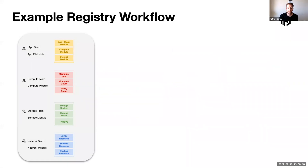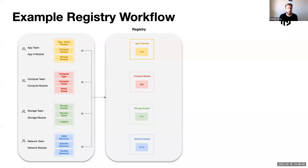Here's an example workflow that touches on the producer-consumer model. On the left-hand side, we have four teams — app, compute, storage, and network — and they've each built a module to share with the wider organization. Each of these modules represents a collection of resources that are life-cycled and deployed together. Each team publishes their module to the registry, pushing out best practice for using those services. Each module has its own version number and can be published at its own velocity without impacting any other module.